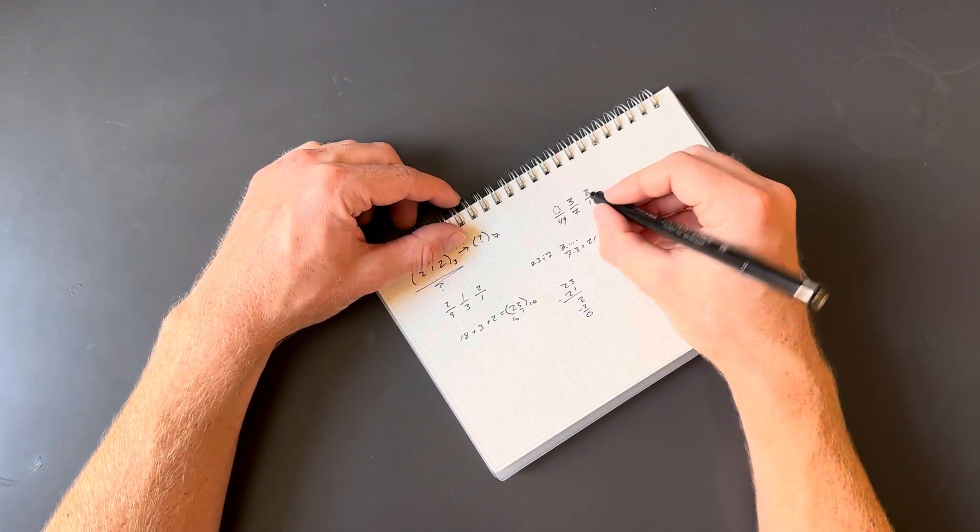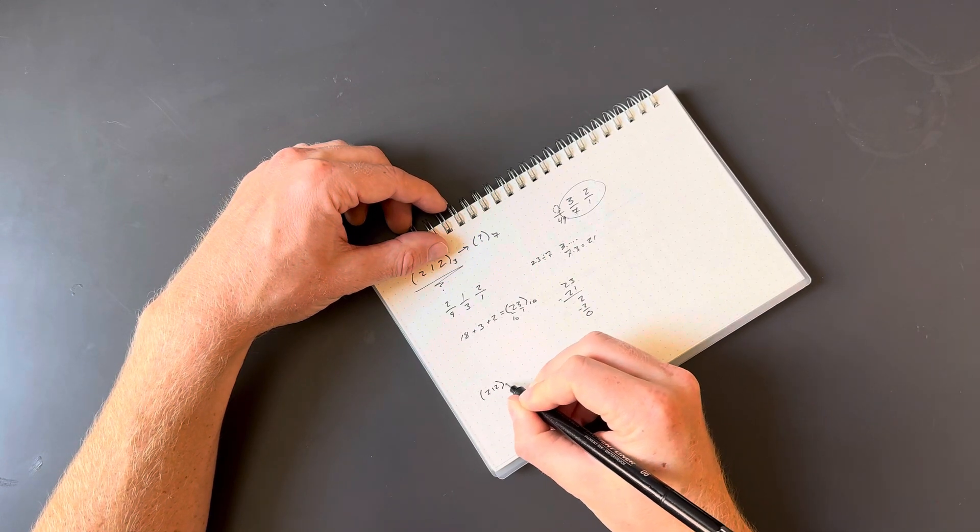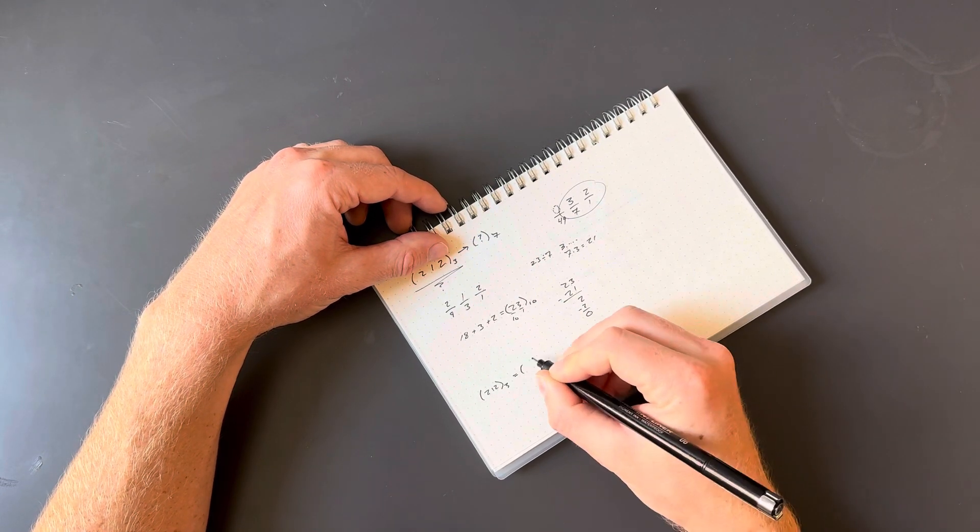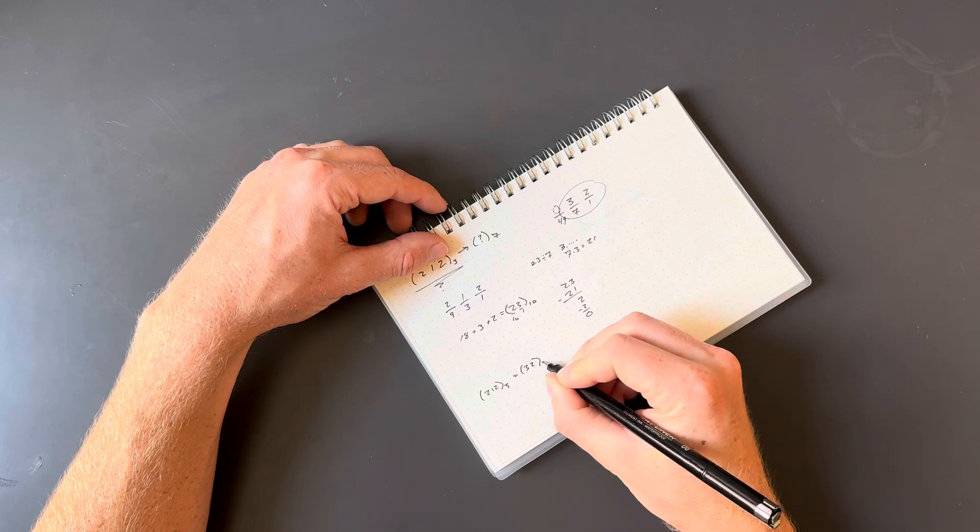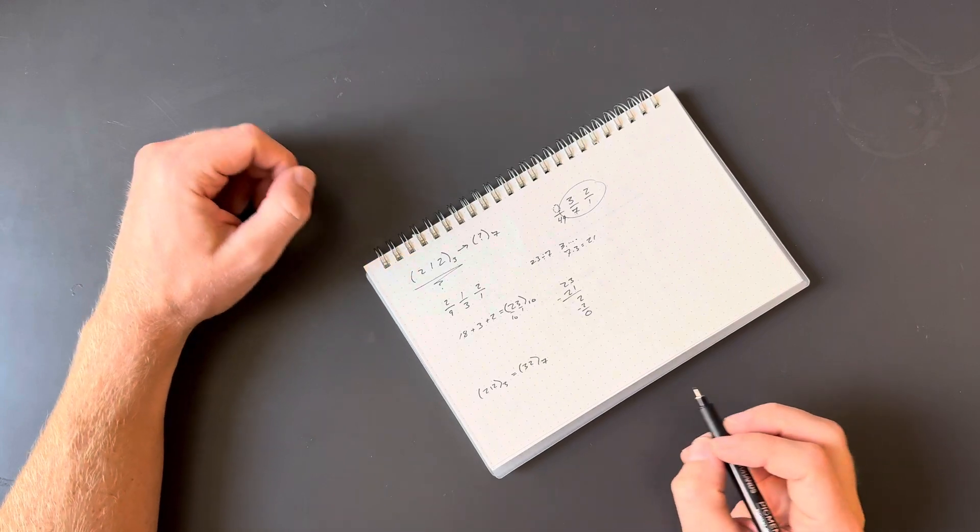So this is our final result. The base 3 number 2, 1, 2 is equivalent to the base 7 number 3, 2. And our conversion is complete, having used the decimal system as a bridge in the middle.